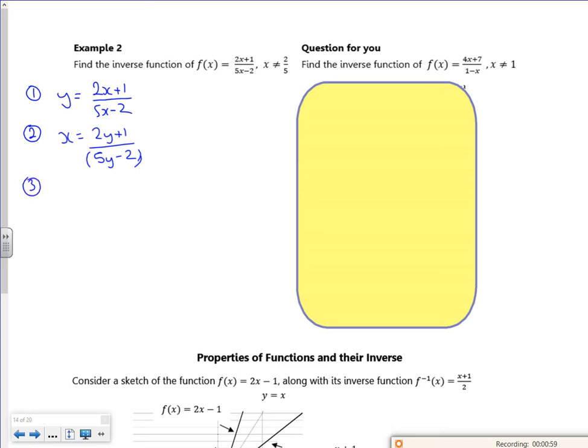So I multiply through: x(5y-2) = 2y+1. I expand the brackets, then put anything with y on the left and everything else on the right.